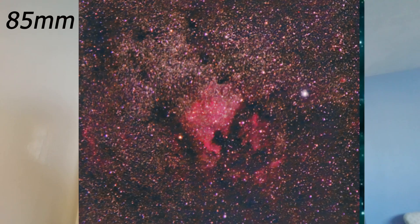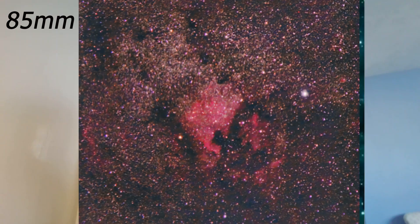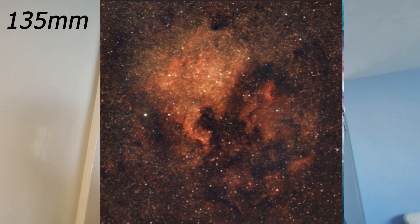85 millimeters is a sweet spot for many astrophotographers. The nebula fills about a third of the frame and you start to see real structure in the emission regions. This is where you begin to get both context and some detail. I really like this focal length — if you're shooting with a tracker and want a balance, 85 millimeters is a great choice.